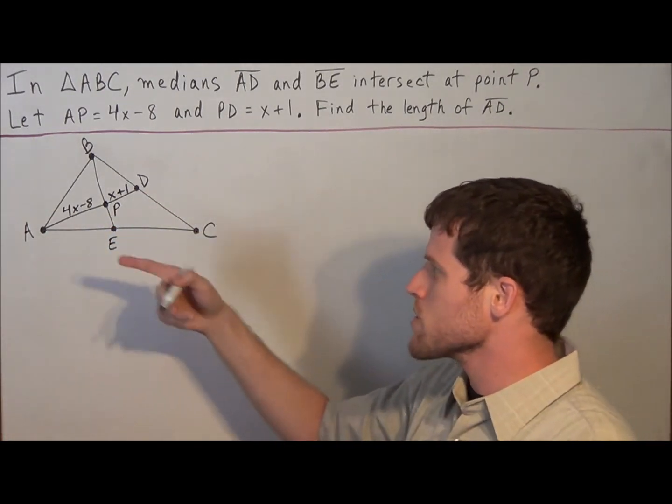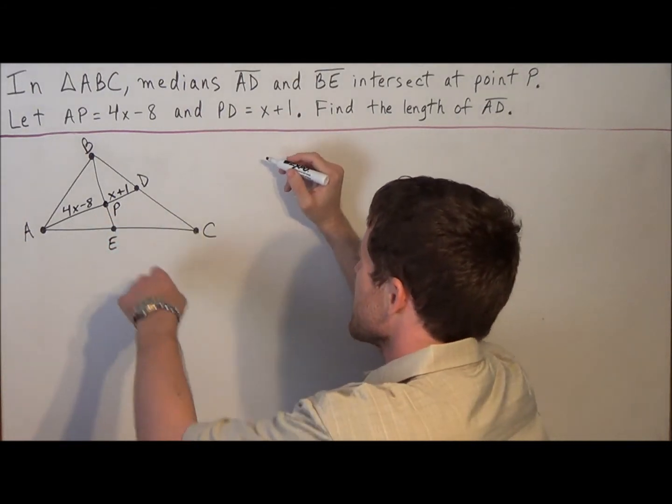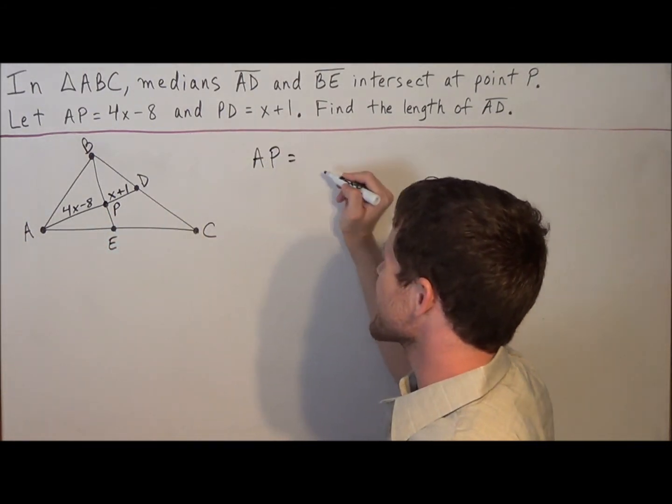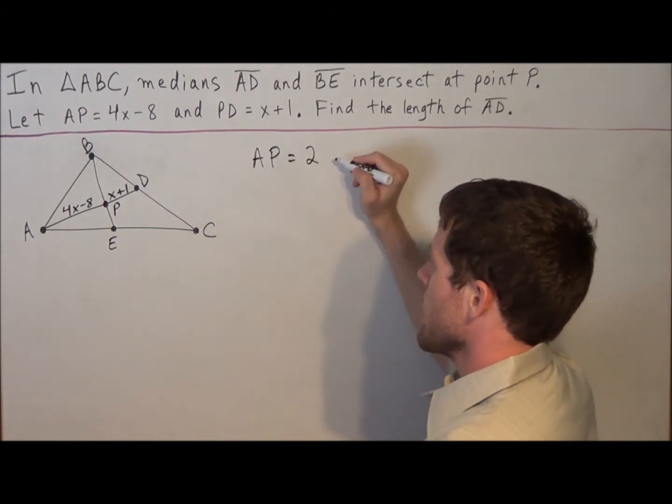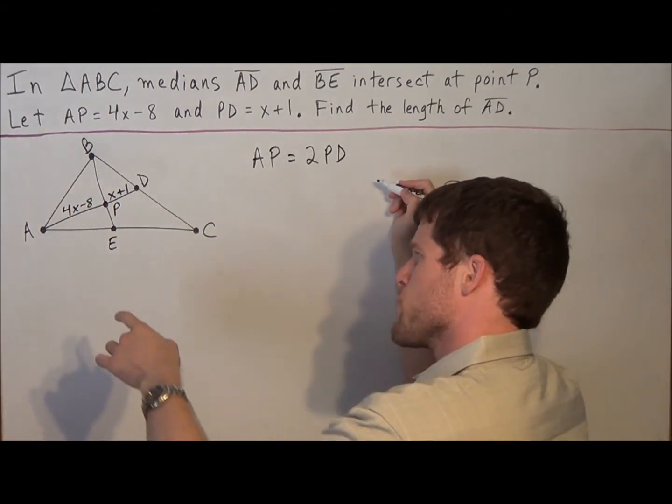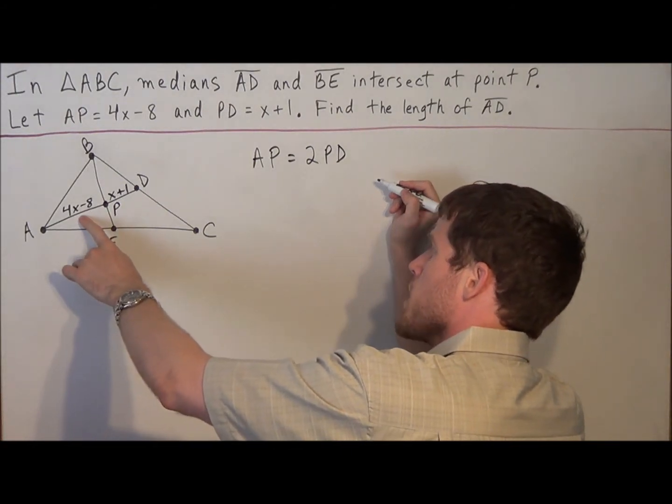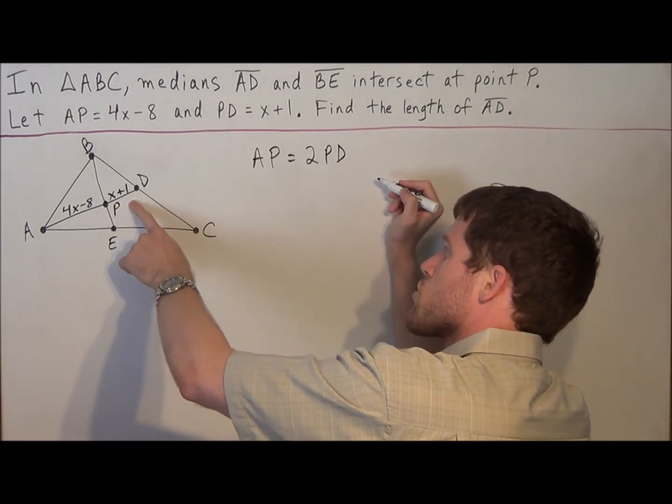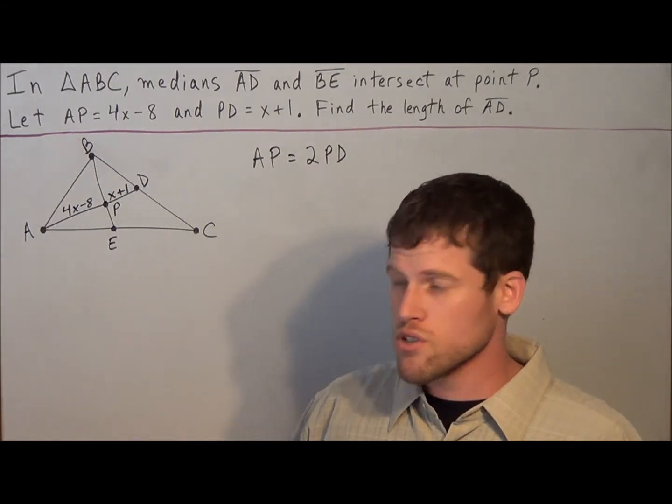So if we think about that, how is that phrased? The long piece is AP, and this segment is twice as long as the short piece PD. So just say that a few times in your head. The long piece AP is twice as long as the short piece PD. But now all we do is substitute.